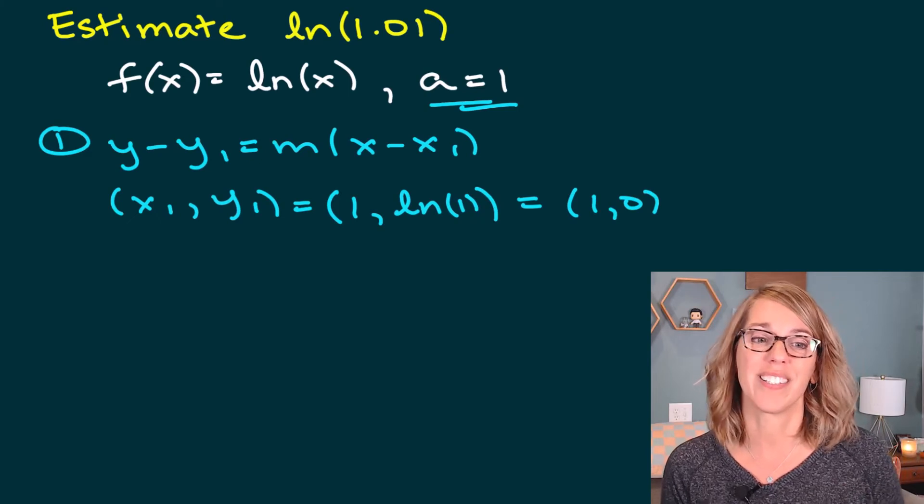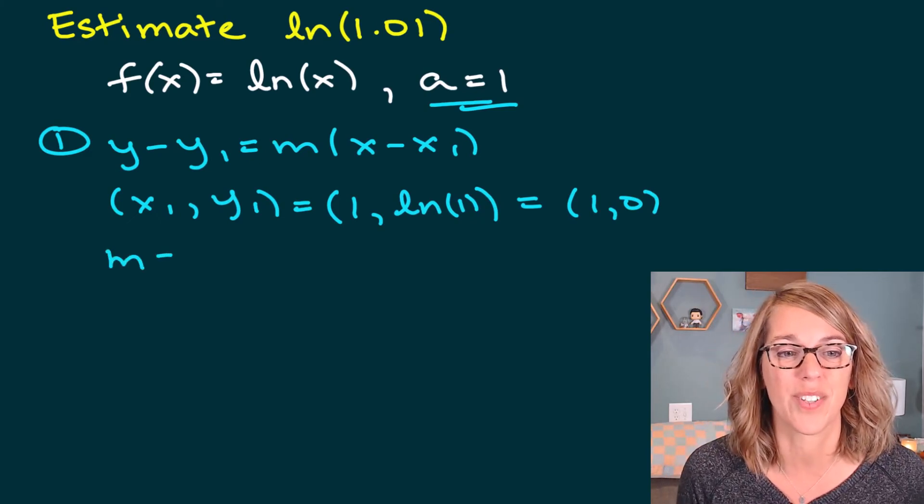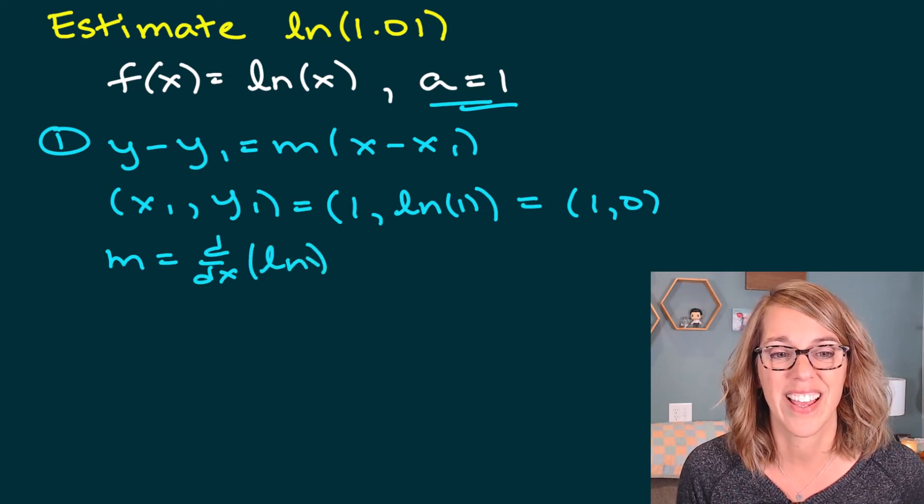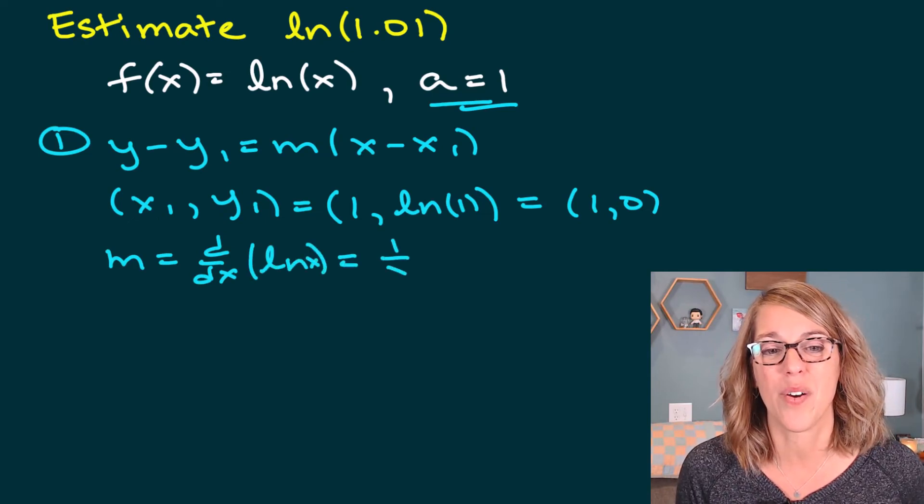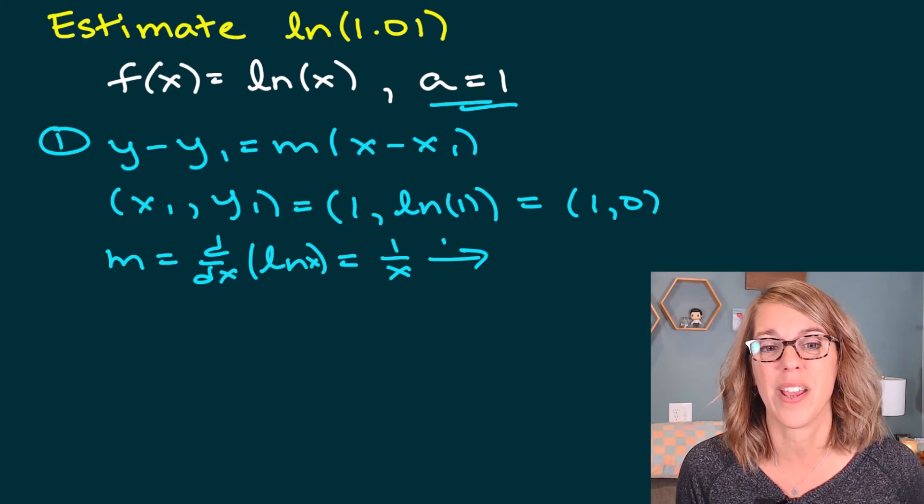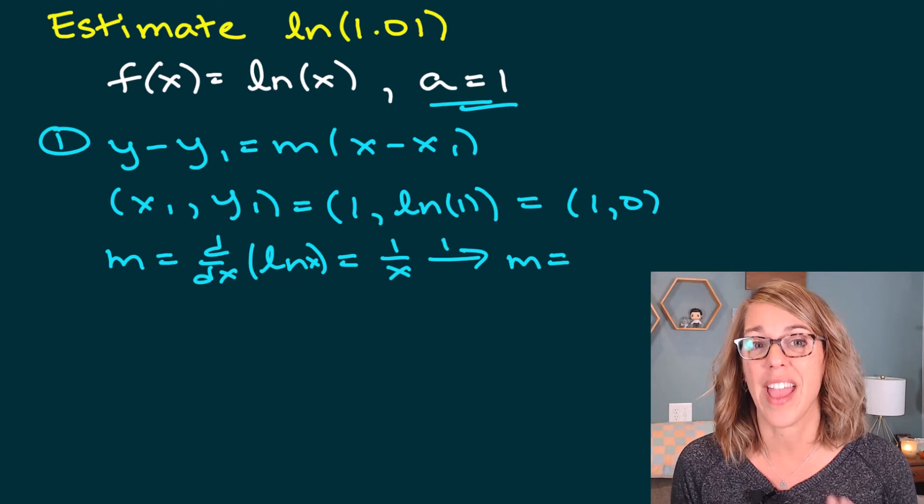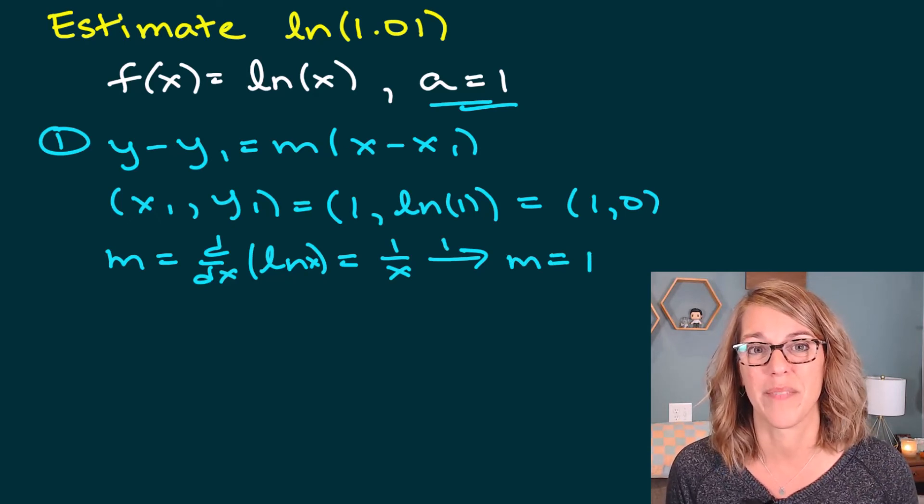I also need my slope, which is the derivative. So m is the derivative of my function ln(x), which is going to be 1 over x. When I evaluate that at x equals 1, I end up with m or f'(a) is equal to 1.